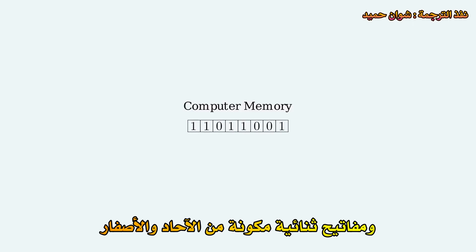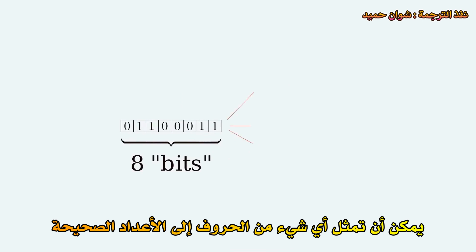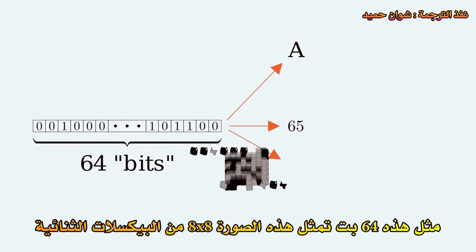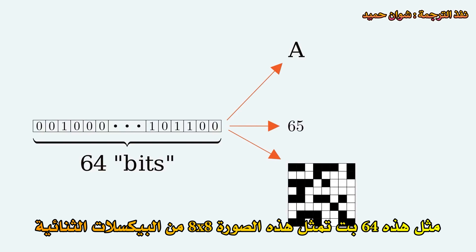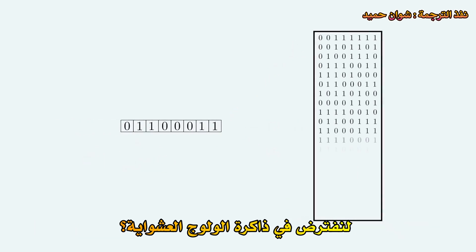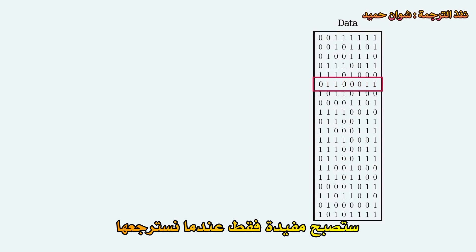Computer memory is measured in bits, binary switches of 1s and 0s. A string of 8 such bits can represent anything from letters to integers. For our purposes, let's visualize them as patterns of this kind — like these 64 bits representing this 8x8 image of binary pixels. I always find that there's a piece missing from the story of bits as memory: how do I get to a memory once it's saved, say, in RAM? Because on its own, it doesn't do much. It's only when we retrieve it that it becomes useful.